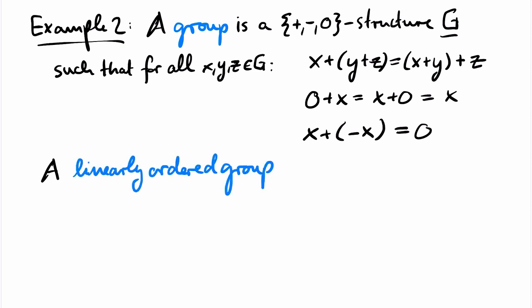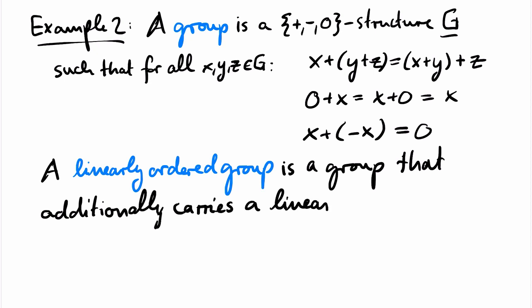A linearly ordered group is a group that additionally carries a linear order, which is compatible with the group structure in the following sense. If a is less than b,